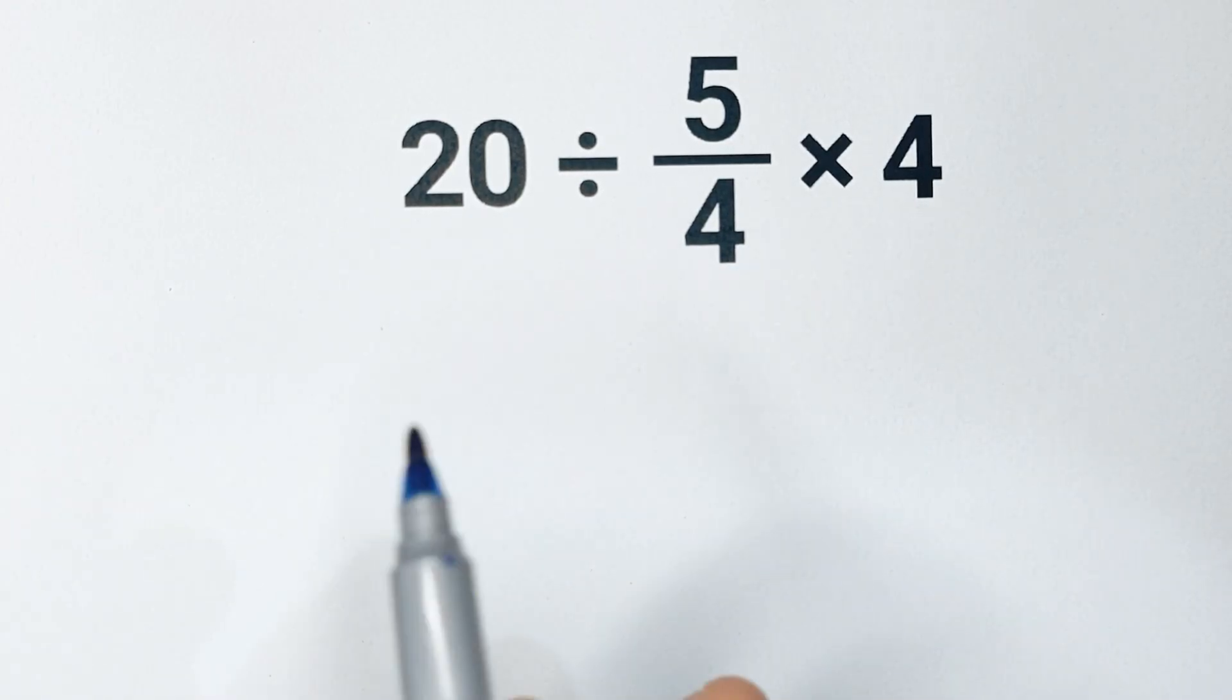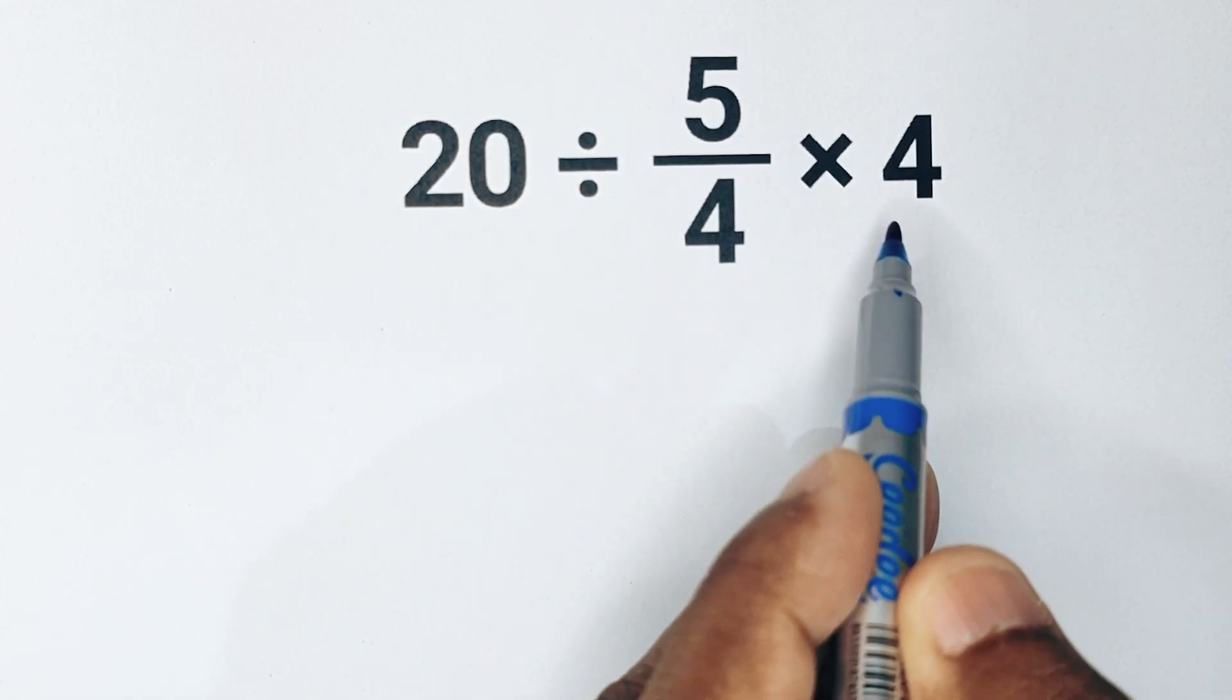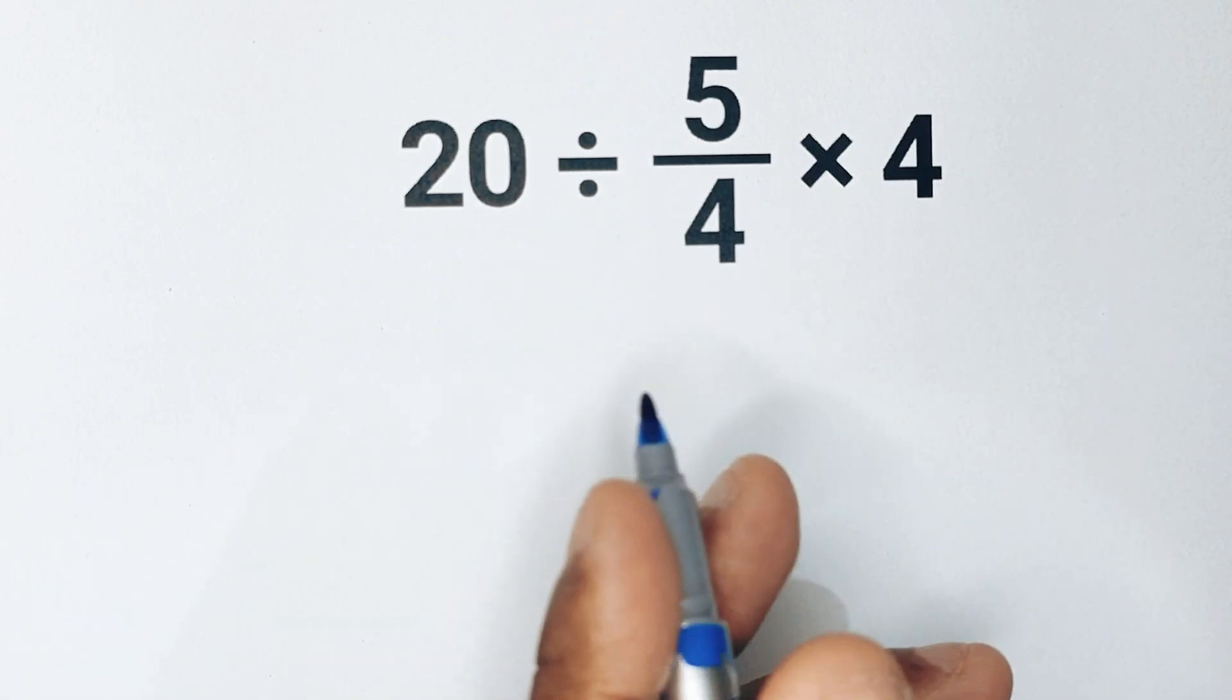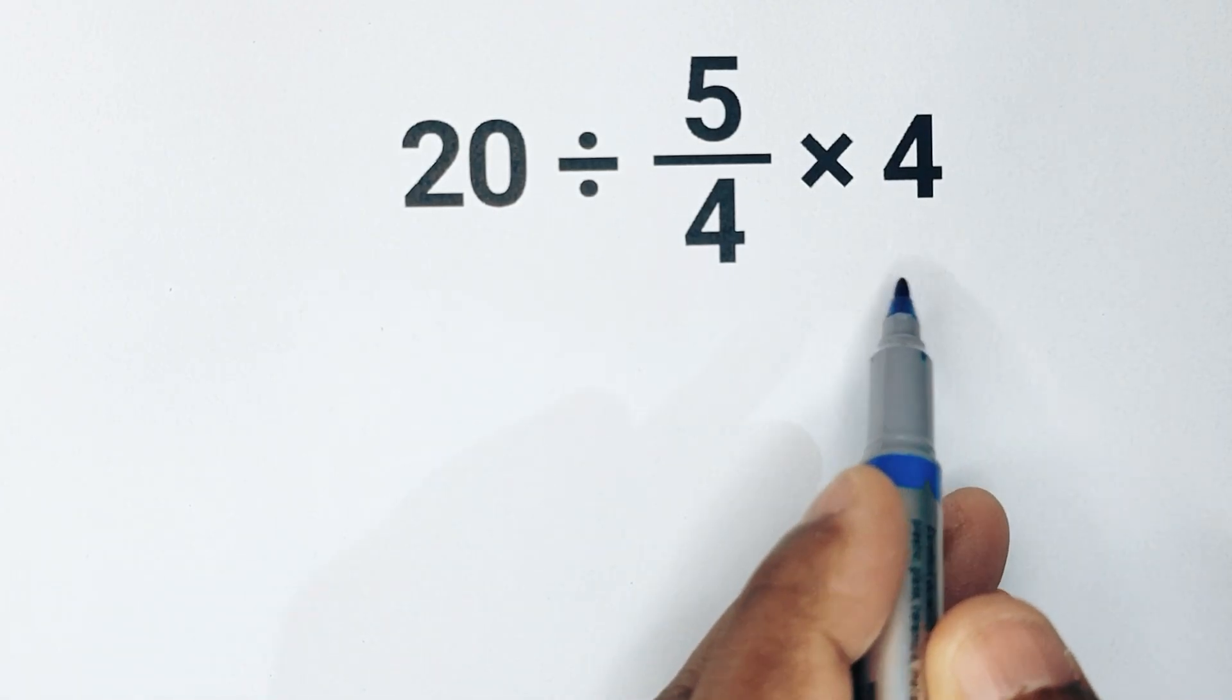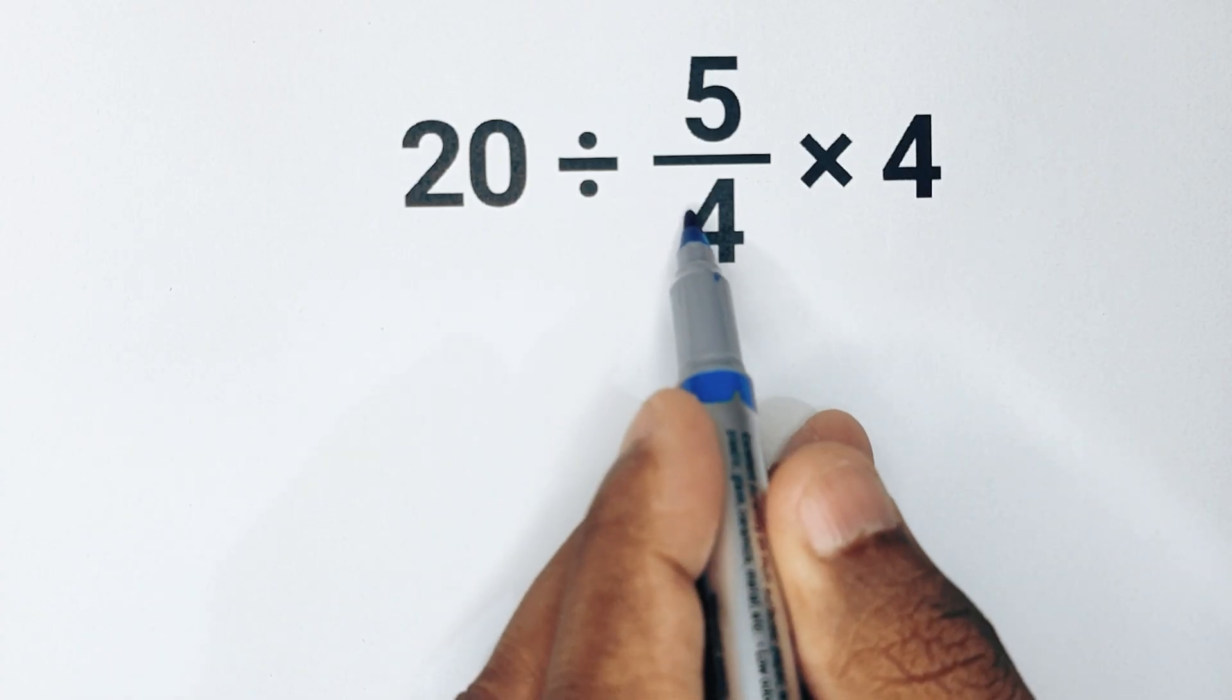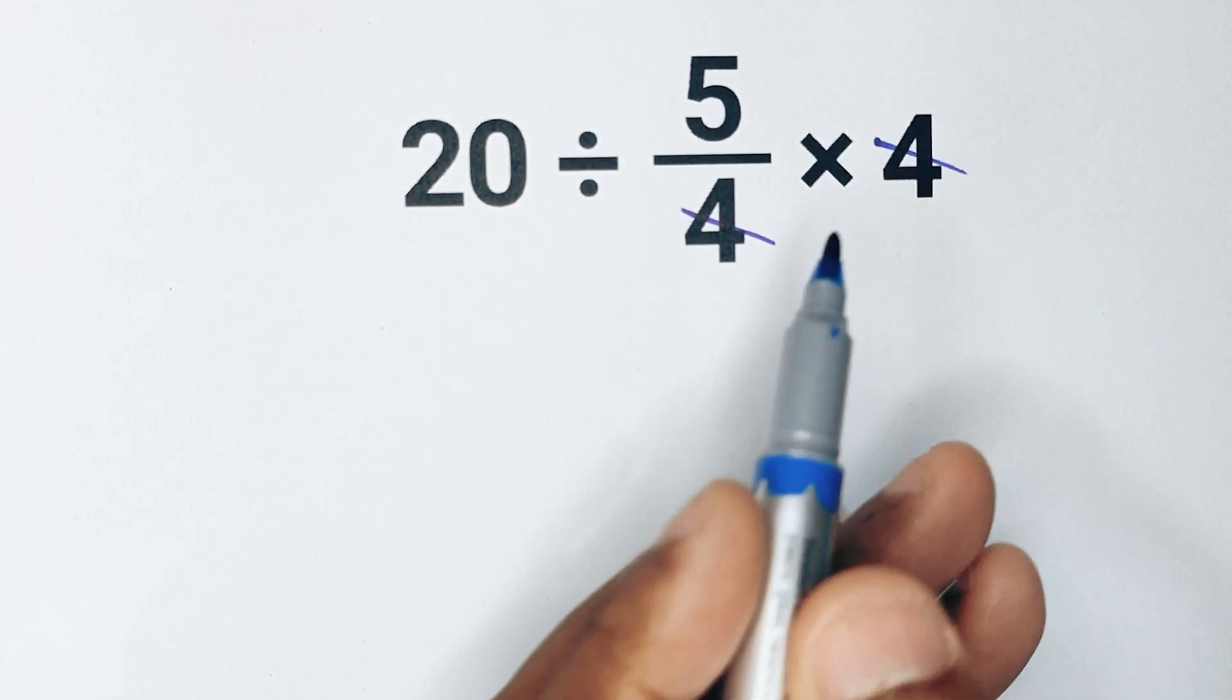Sounds simple right? But many people make a simple mistake here. When they see 20 divided by 5 over 4 times 4, they quickly try to simplify the 5 over 4 times 4 part first, so they think this 4 and this 4 cancels out and get 5.